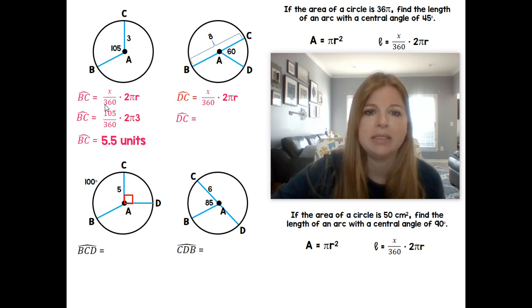So arc BC is equal to 60 over 360 times 2π4. Because again, the radius, we've shown the diameter is 8, my radius would be 4. If I multiply that out, you should be getting 4.19.